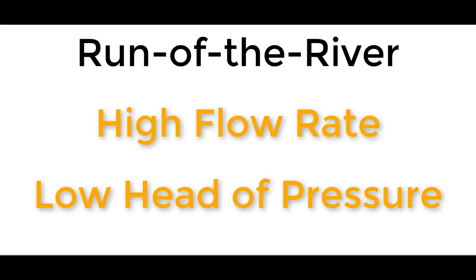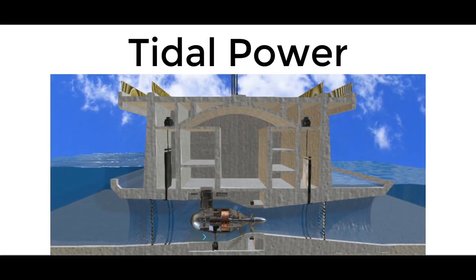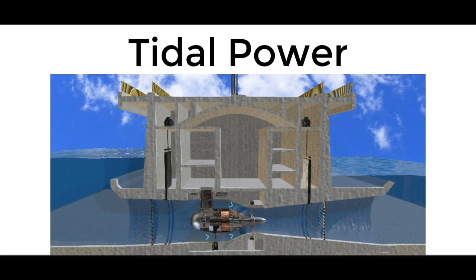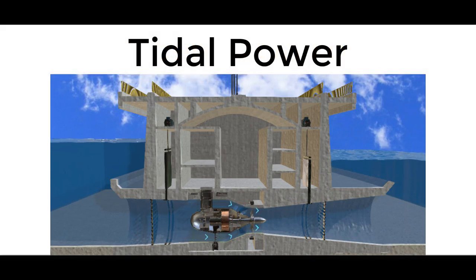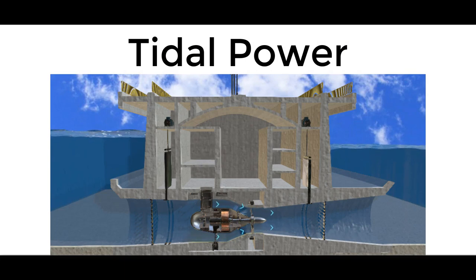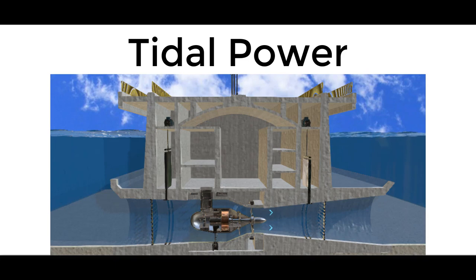Another good application for a bulb turbine is tidal power generation. The tide rises by perhaps 5 to 15 meters per day and then flows back out again, but there is a lot of water in the ocean, meaning a very high flow rate. The water rushes in and out twice a day, and with a head of say 10 meters that's more than enough for this bulb turbine to function — exactly the conditions the bulb turbine is suited for.